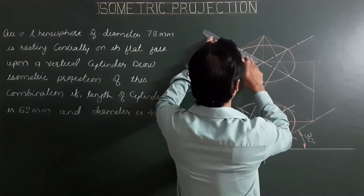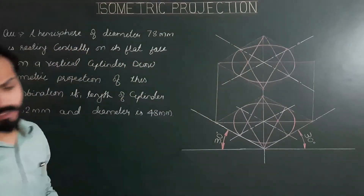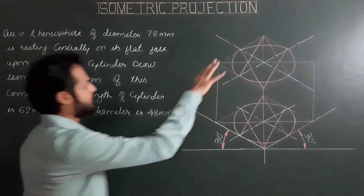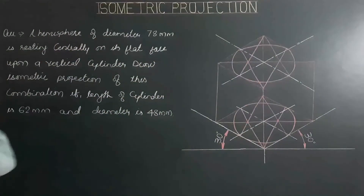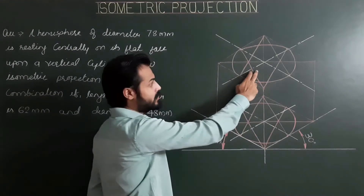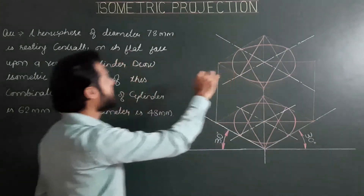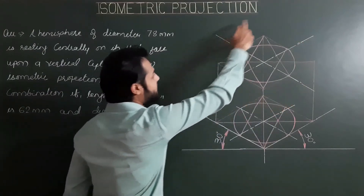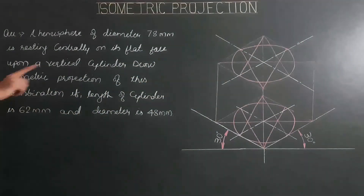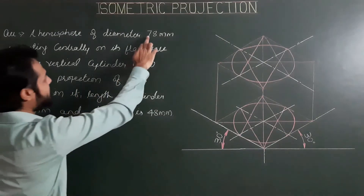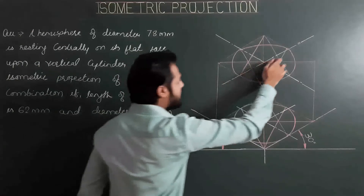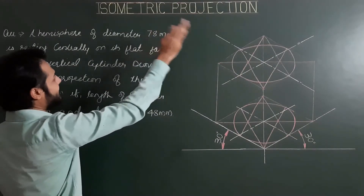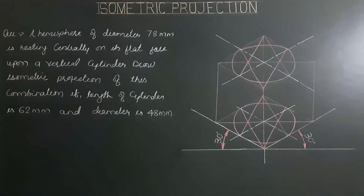Now, from the upper face or upper circular face of the cylinder, we start the projection of the hemisphere. The upper circular plane of the cylinder is the same plane as the flat face of the hemisphere. First, we project the flat circular face of the hemisphere — marking limits of 78 mm (half of 78 is 39) along first and second iso-axis on both sides.